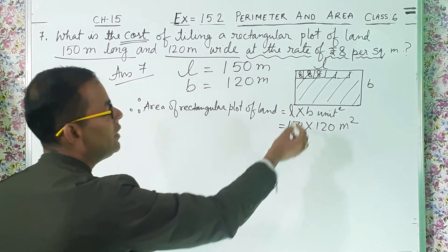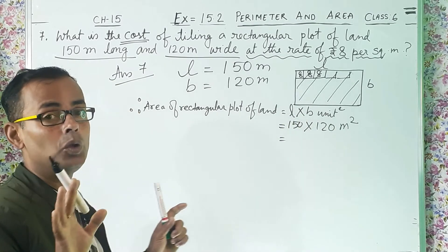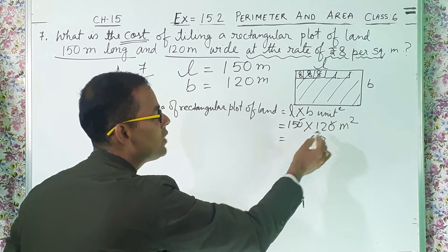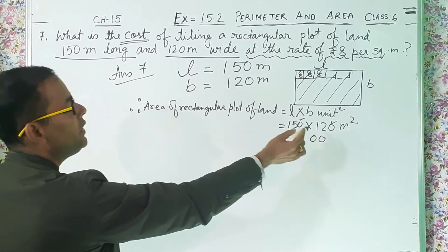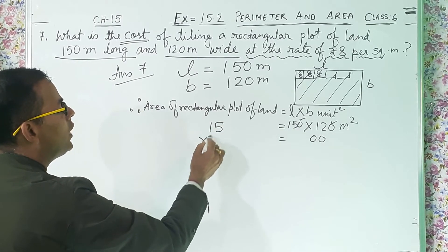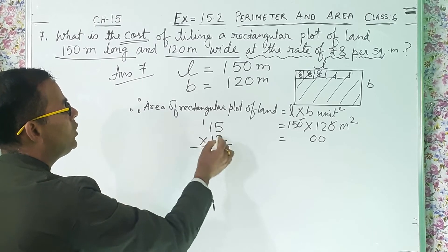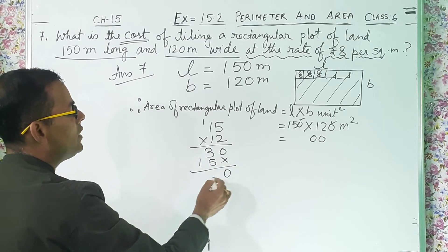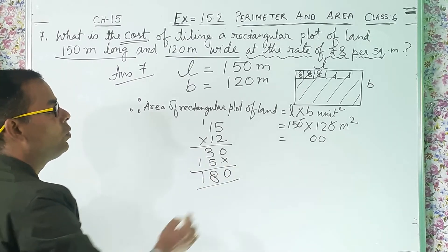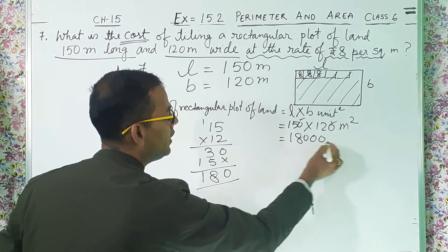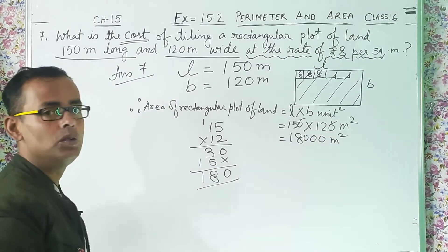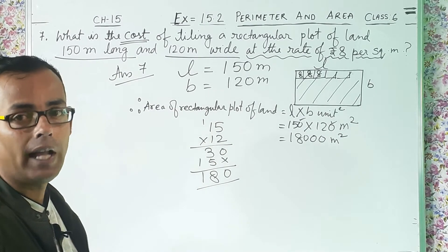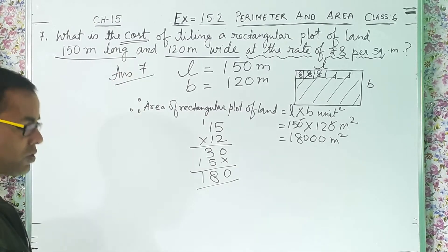Now we will multiply. Here is one trick: there is a zero in 150 and a zero in 120, so put those two zeros aside. Now what is left is 15 and 12. Multiply 15 and 12: 2 fives are 10, 2 ones are 2, carry; 1 five is 5, 1 one is 1 — you get 180. So the area is 18,000 meter square. This is the area of the rectangular plot of land.